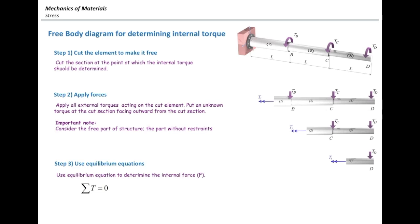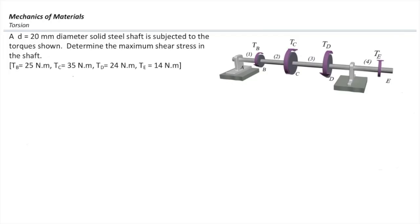With that, I'm going to solve a problem. Assume we have a system of shafts connected together subjected to different torques. We want to determine the maximum shear stress in the entire shaft. The magnitudes and directions of the torques are provided. The shaft has a circular cross-section with a 20 mm diameter. The equation is simply Tc over J. J is easy to determine — that is pi times diameter to the fourth over 32, and C is half the diameter. The question is: what is the torque? To determine torque, we need to use the free body diagram.